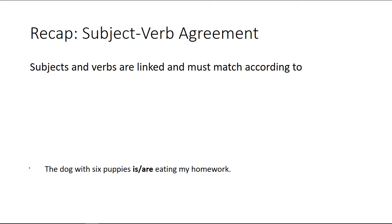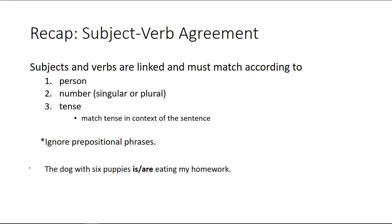So let's recap. Subject-verb agreement. Subjects and verbs are linked and must match according to person, number singular or plural, and tense. And remember, you can ignore prepositional phrases when you're identifying the subject. So with this one, the dog with six puppies is or are eating my homework. Remember that. It's pretty handy to ignore that prepositional phrase. The dog is eating my homework.